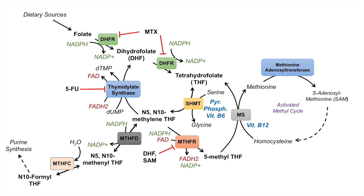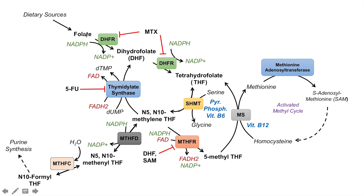It all depends on what the cell requires. If the cell requires N10-formyl tetrahydrofolate, this pathway goes toward purine synthesis. If it requires dTMP for DNA synthesis, it goes that direction. If it requires S-adenosylmethionine for catecholamine biosynthesis or other pathways, it goes toward the activated methyl cycle. And if it just needs to be recycled back into tetrahydrofolate, it can go that direction as well. The portion of the pathway from tetrahydrofolate to N5,N10-methylene tetrahydrofolate to 5-methyl tetrahydrofolate back to tetrahydrofolate is considered the folate cycle.